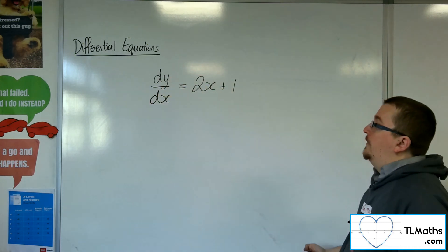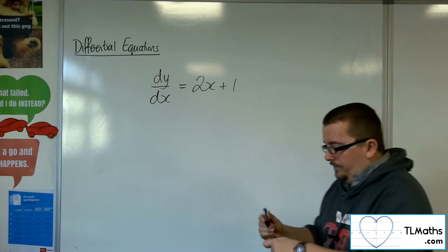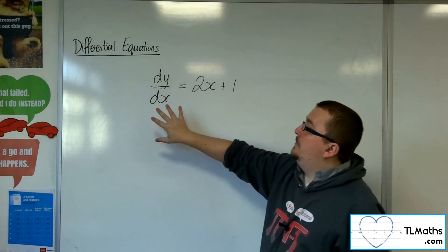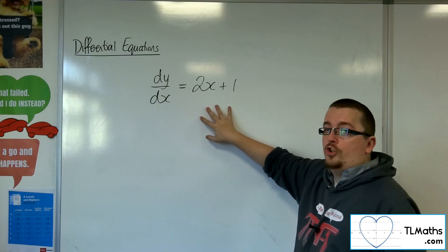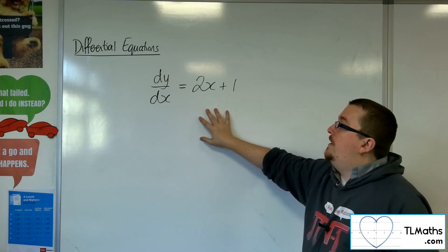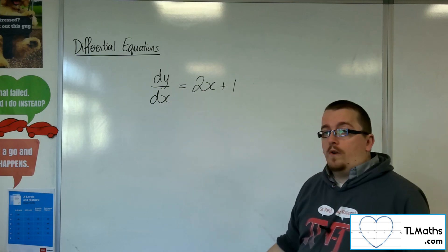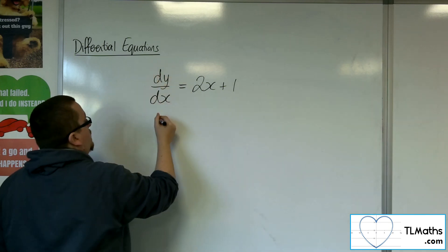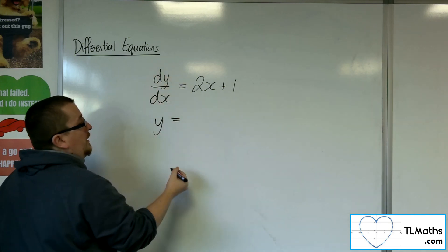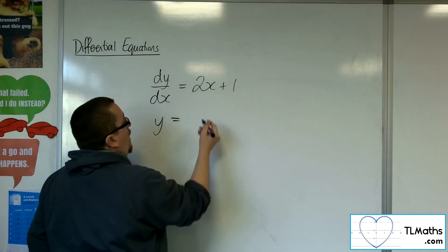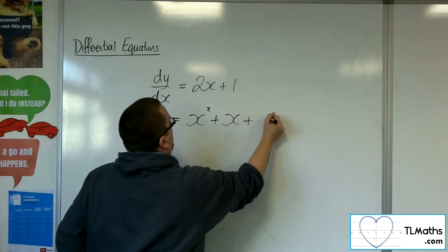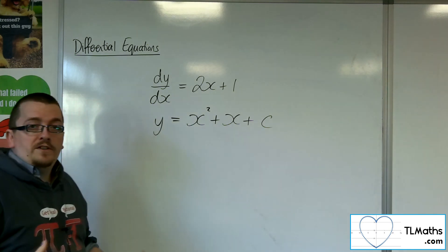Now when we've got something just like this, dy by dx equals 2x plus 1, so dy by dx is a function of x, then all we need to do is just integrate both sides effectively. So this will integrate back to y, and we integrate the 2x plus 1 to get x squared plus x plus some constant c of integration.